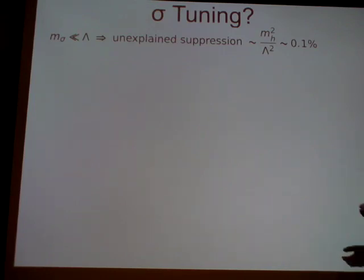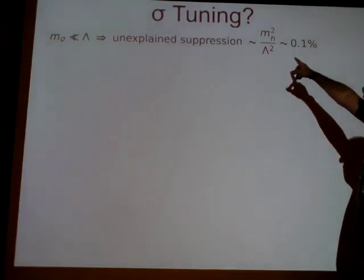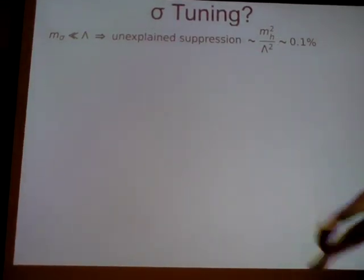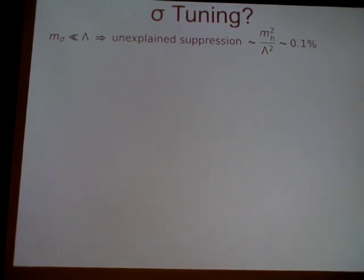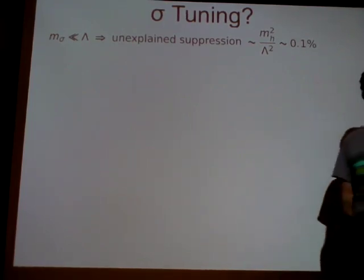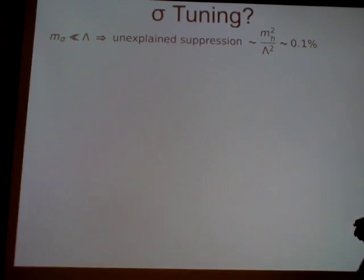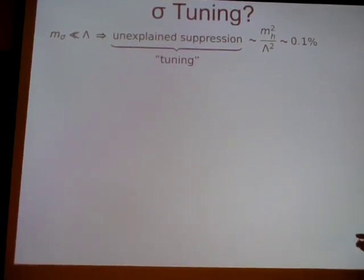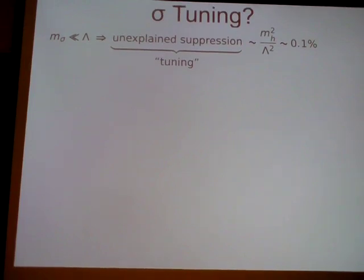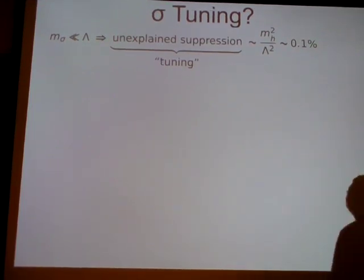There would still be some sort of an accident or unexplained suppression, of order the square of the mass over the expected mass, and that's about 0.1%. In my mind, it's conceptually no different from a tuning — there's no parameter being finely adjusted, but there's some accident that we expect to happen very rarely because of some accidental cancellation. The best estimate for the chance of that happening is about 0.1%, so I'm going to regard that as a tuning throughout this talk.